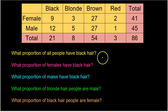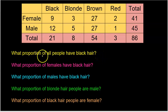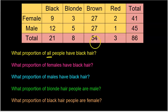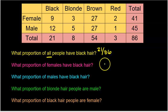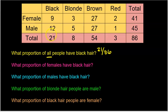Here are some examples. What proportion of all people have black hair? That's 21 out of 86 — very easy. Now that's technically a marginal distribution because I got that 21 from the margin.